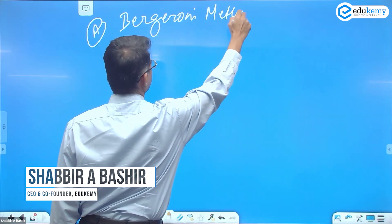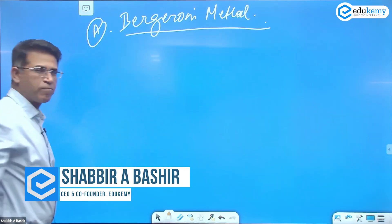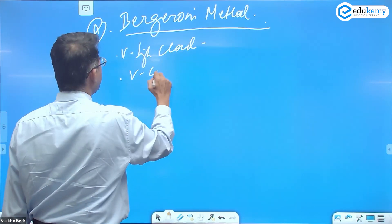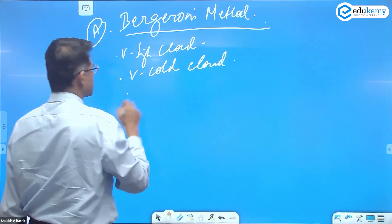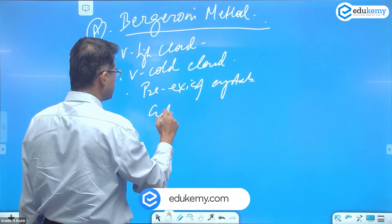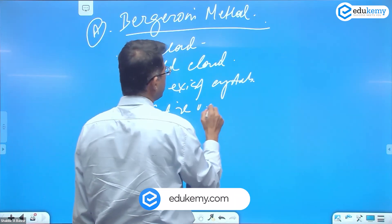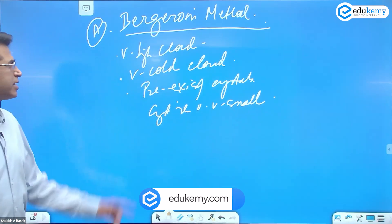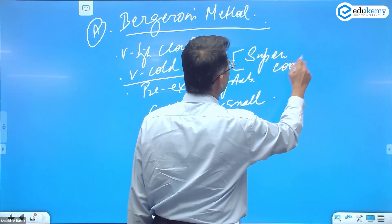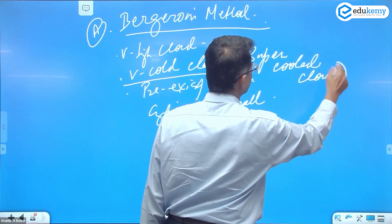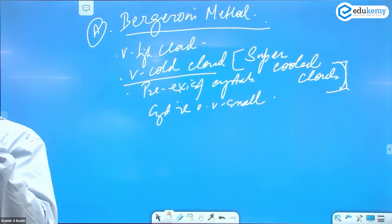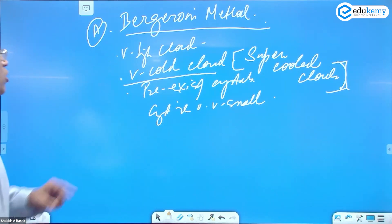This is Bergeron's method. In Bergeron's method, it's a very high cloud, a very cold cloud. Such clouds have pre-existing crystals, but the crystals are very small. These are cold clouds, also called supercooled clouds, and they have ice crystals, but the ice crystals are very small.